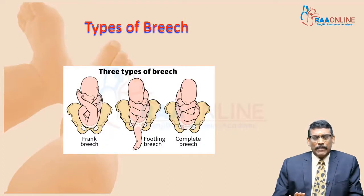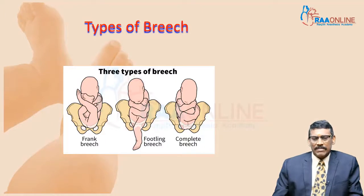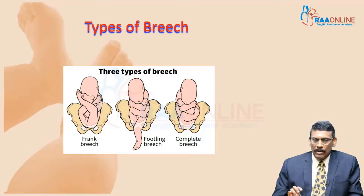The types of breech are divided into complete and incomplete. In complete breech, the degree of flexion is maintained in all joints. Incomplete breech has three types: frank breech, footling breech, and knee presentation. In frank breech, the degree of flexion is broken at the knee joint. When flexion is broken at the hip joint, you get footling presentation. When broken at both the knee and hip joints, you get footling. When broken only at the hip and not the knee, you get a knee presentation.